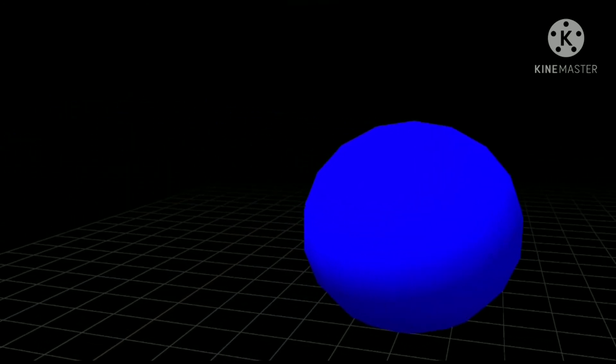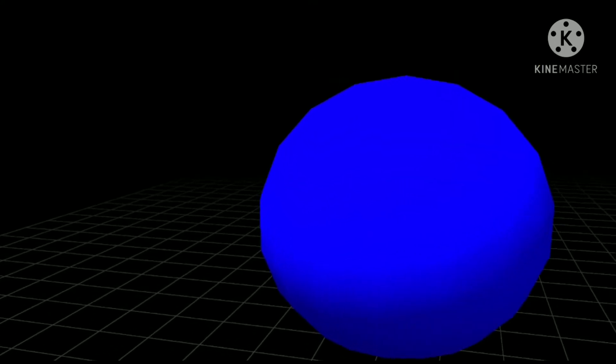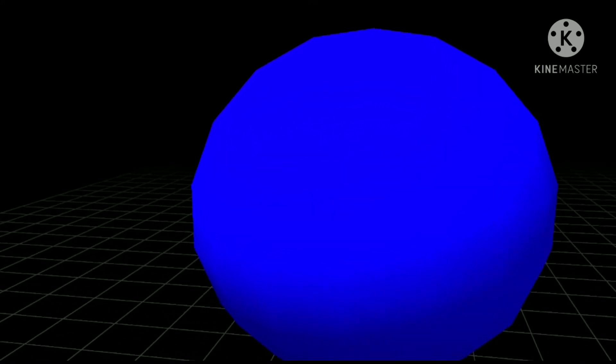Next planet is Neptune, king of the ocean, apparently. This is the bluest planet ever. And actually, it's a gas giant. No jokes about you. Let's admire it, and I'll get onto the last planet.